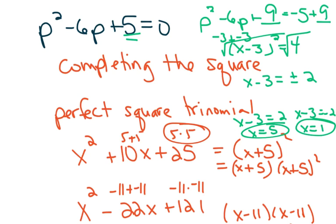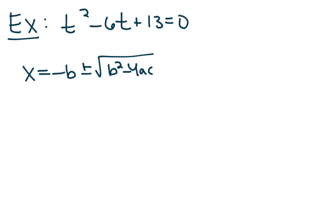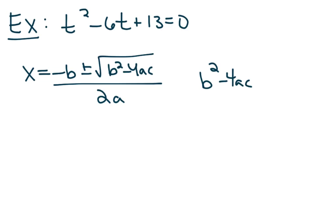We'll come back to completing the square at another time — we don't normally use it to solve quadratics. There are two ways to decide how to go about solving a quadratic. One way is to find the part under the square root sign in the quadratic formula — the b squared minus 4ac part — which is called the discriminant.